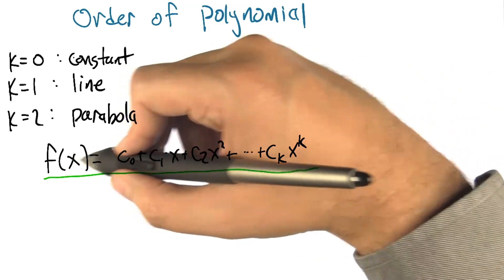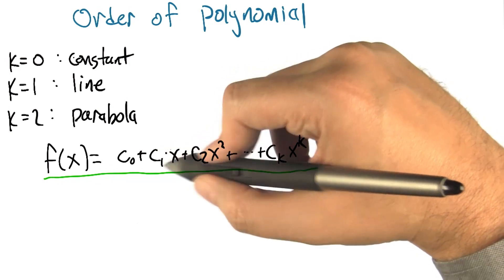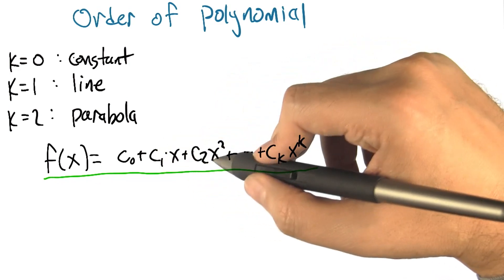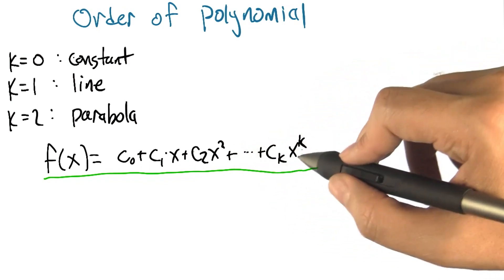Right, we've got x is our input and what we're going to do is we're going to take some constant and add that to some scaled version of x, times some scaled version of x squared, plus some scaled version of x cubed, all the way up to some order k.